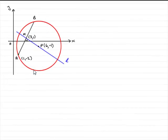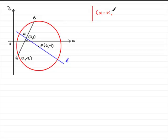In order to find an equation for the circle, we need to remember the basic format of the equation of a circle. The equation of a circle is essentially (x minus x1) squared plus (y minus y1) squared equals r squared, where x1 and y1 are the coordinates of the center of the circle.